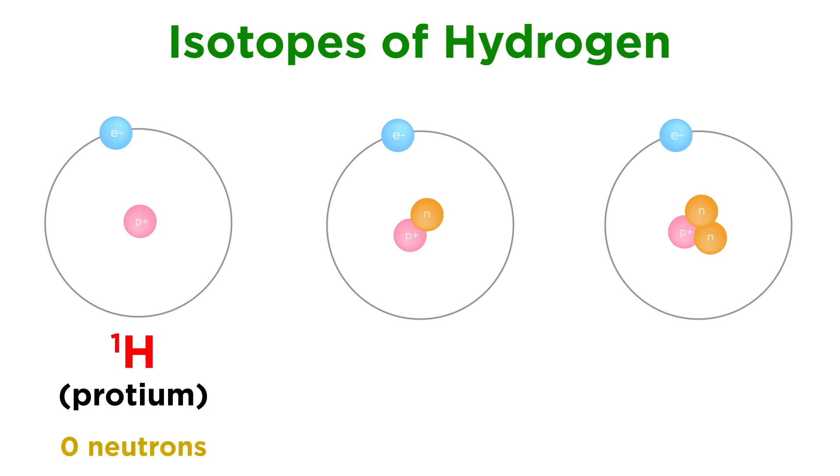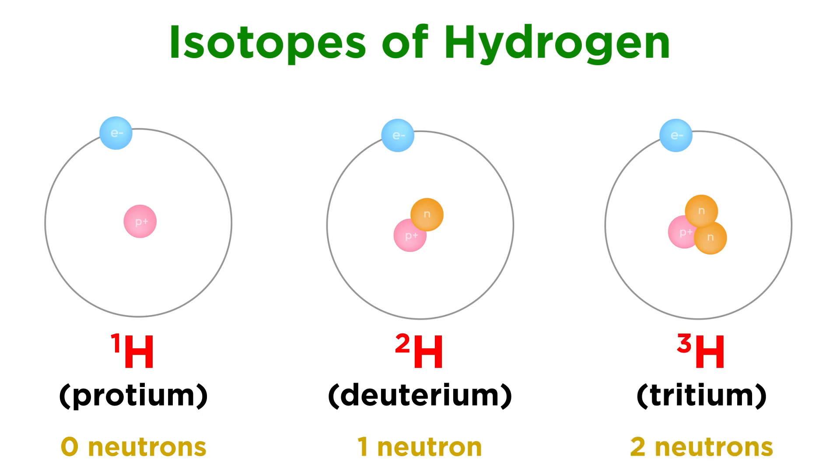1H is called protium, containing just the one proton and no neutrons. 2H is called deuterium, containing one neutron. 3H is called tritium, containing two neutrons. Protium is by far the most abundant isotope, at 99.98% abundance.